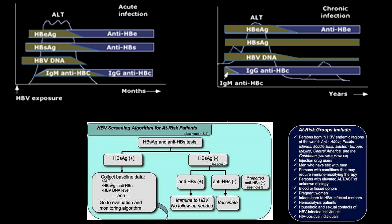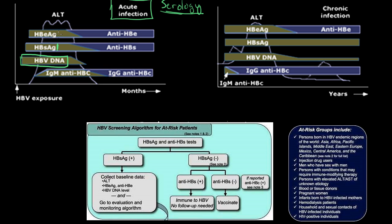I'm going to transition to discuss serology for a little bit. Understanding chronic hepatitis B requires us to briefly review different lab values. In an acute infection, you have your hepatitis B virus — your double-stranded DNA — and two main antigens that the virus produces: your surface antigen and your E antigen.